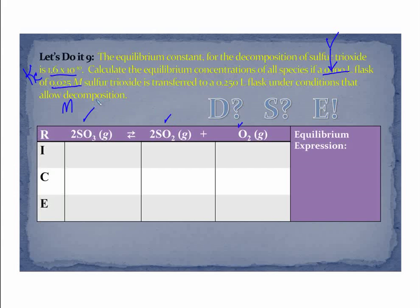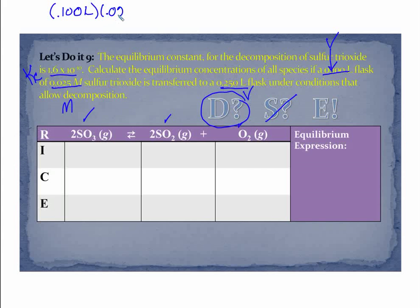Before it's allowed to decompose — maybe it's being chilled or whatever, then brought up to conditions that will allow it — it is transferred to a new volume. So we have a volume going to a volume. That means we have to do our dilution. There isn't a stoichiometry, but we do need to complete the dilution before we can plug into our RICE. My first volume was 0.100 liters, my first molarity was 0.025 molar, and that was transferred to a 0.250 liter flask. So my new molarity is 0.010.